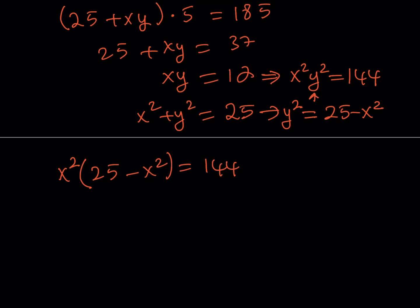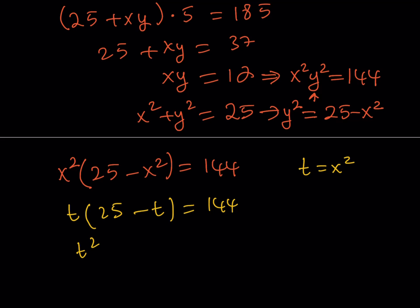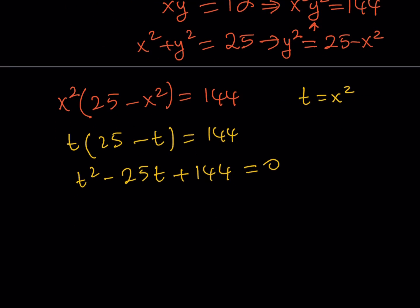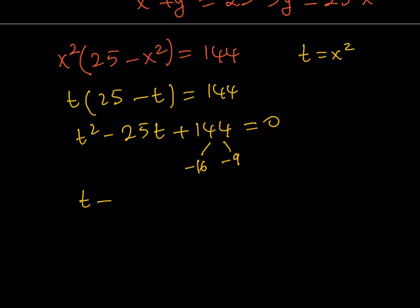Let's do another substitution. Let t equal x squared. From here, we get t times 25 minus t equals 144. Distributing gives t squared minus 25t plus 144 equals 0. This is factorable — I'm looking for two factors of 144 whose sum is negative 25, and those are negative 16 and negative 9. So this factors as t minus 16, multiplied by t minus 9, equals 0.